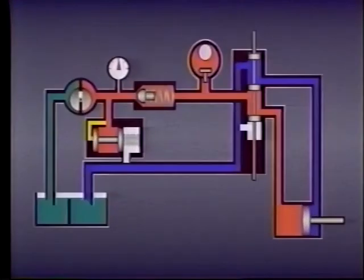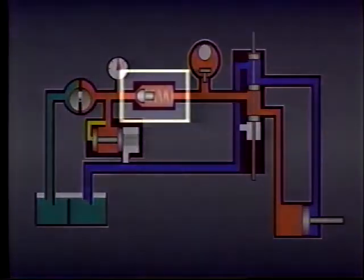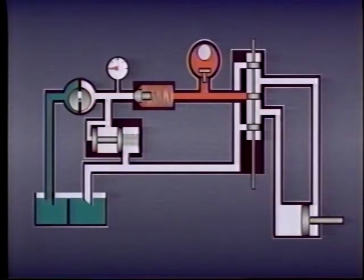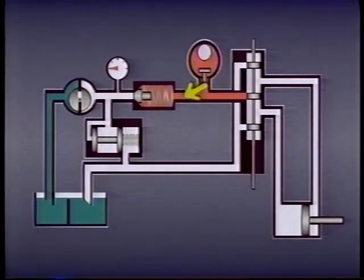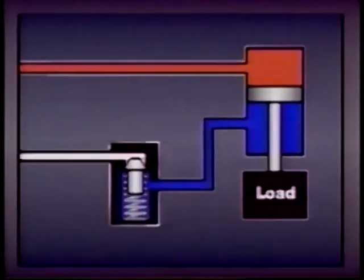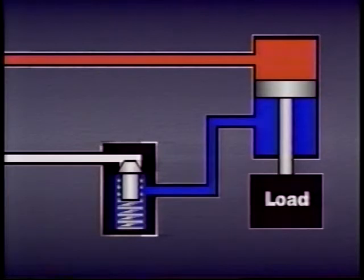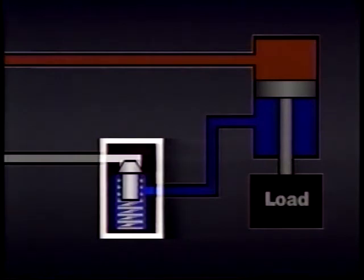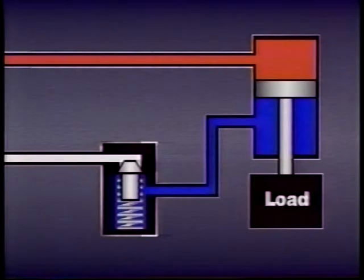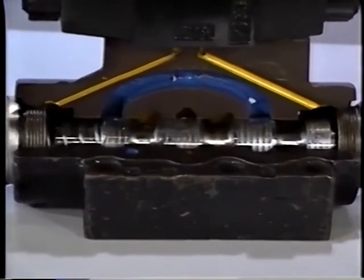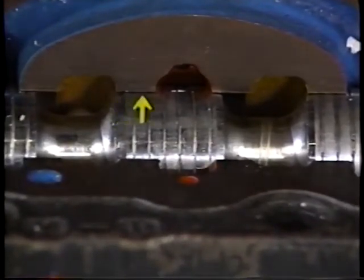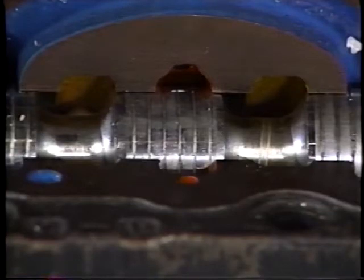Check valves are also often used to isolate sections of a system. For example, the check valve in this system prevents flow from other parts of the system from dumping back through the relief valve or running the pump backwards. Finally, check valves are also used to hold loads in place. This is possible because there is very little leakage past the poppet or ball. Other valves generally permit more leakage than check valves because there are no seals between the various ports — the close fit between mating surfaces is all that prevents the passage of fluid. In many cases, some leakage is actually required for proper lubrication of the valve as it operates.